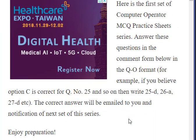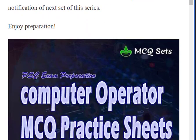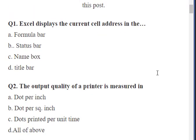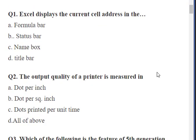This was the first set in this practice series and it contained 10 questions, and I'm going to discuss about these 10 questions in this video. The first question on this post was: 'Excel displays the current cell address in the ___' and we have four options: formula bar, status bar, name box, and title bar.